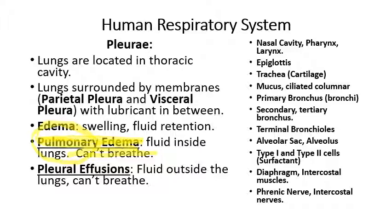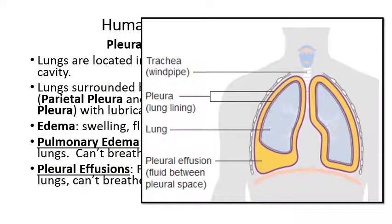There's another thing that can go wrong called pleural effusions. Fluid accumulates outside the lungs within the pleural space — often between the parietal and visceral layers of the pleural membrane. You can't breathe as well because the space that the lungs have to expand has been reduced. If you get this, the hospital will poke a hole and suck the fluid out with a needle and syringe.